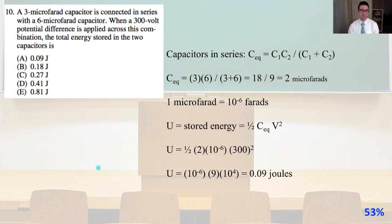U equals stored energy, which equals one-half times the equivalent capacitance times voltage squared. So U equals one-half times 2 times 10 to the minus 6 times 300 squared. U equals 10 to the minus 6 times 9 times 10 to the 4, which equals 0.09 joules. And that is answer A that we're going to end this problem set on.